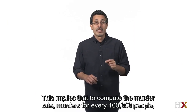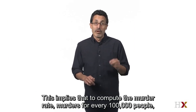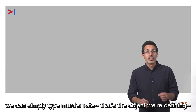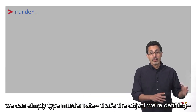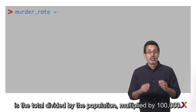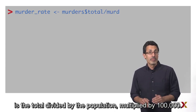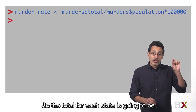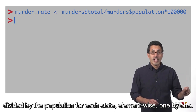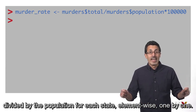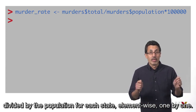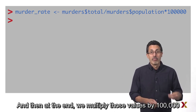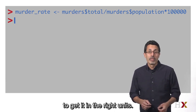This implies that to compute the murder rate — murders for every 100,000 people — we can simply type: murder_rate, that's the object we're defining, is the total divided by the population multiplied by 100,000. So the total for each state is going to be divided by the population for each state, element-wise, one by one. And then at the end, we multiply those values by 100,000 to get it in the right units.